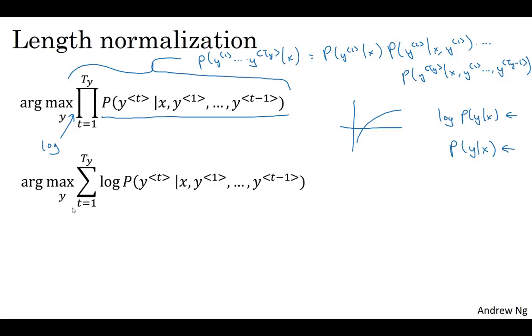Now there's one other change to this objective function that makes the machine translation algorithm work even better. If you refer to this original objective, if you have a very long sentence, the probability of that sentence is going to be low because you're multiplying many terms here, lots of numbers less than one to estimate the probability of that sentence.